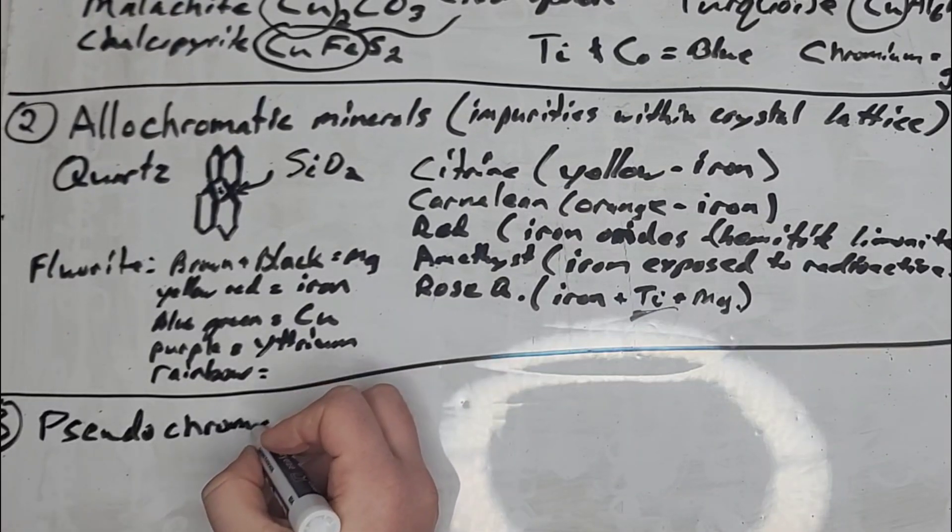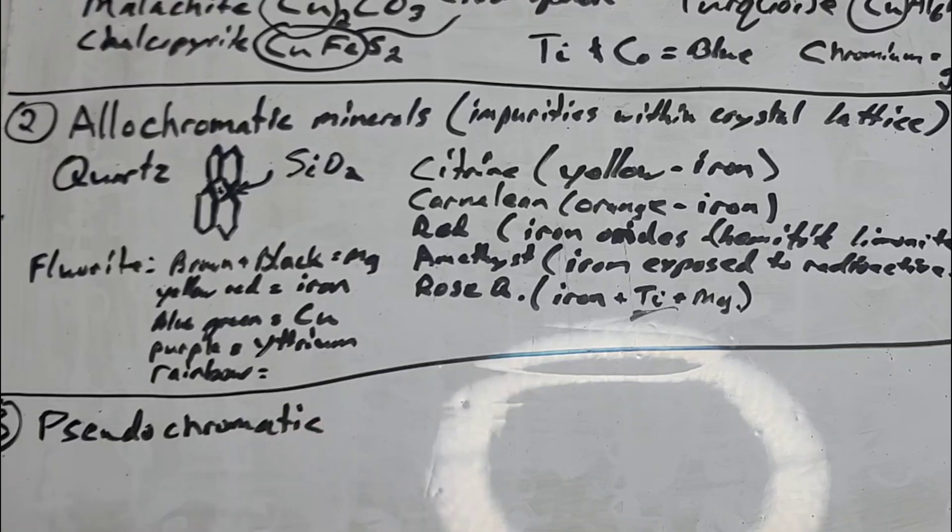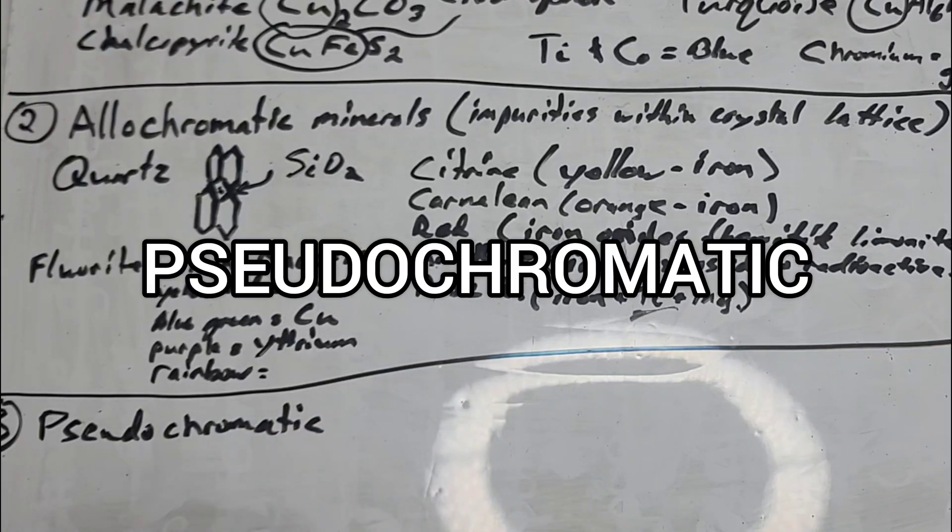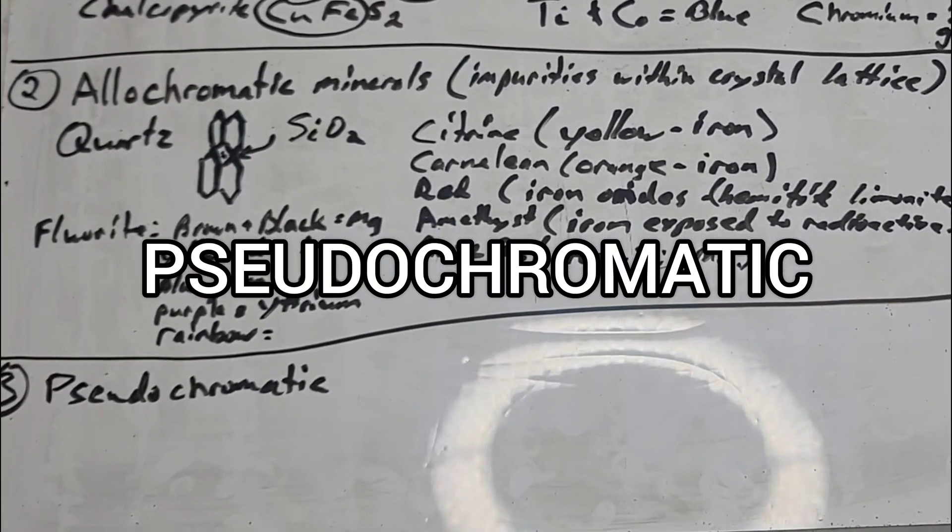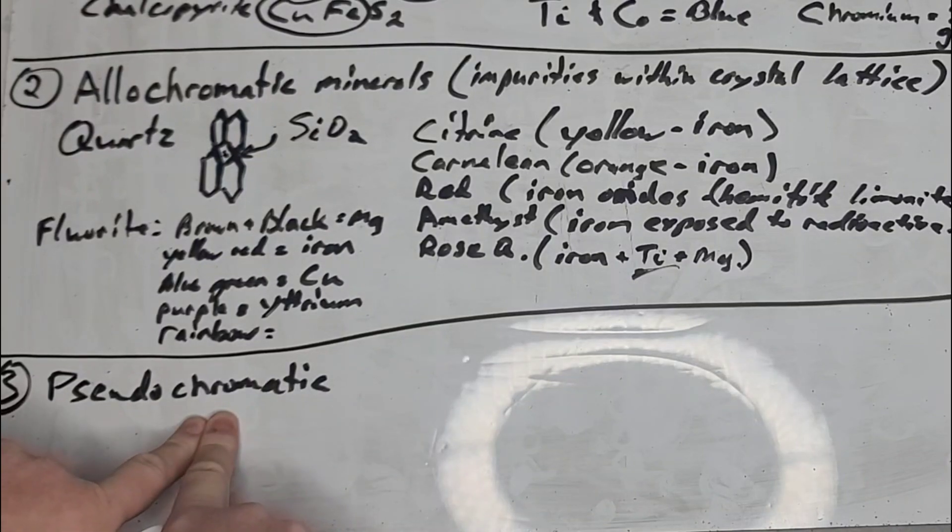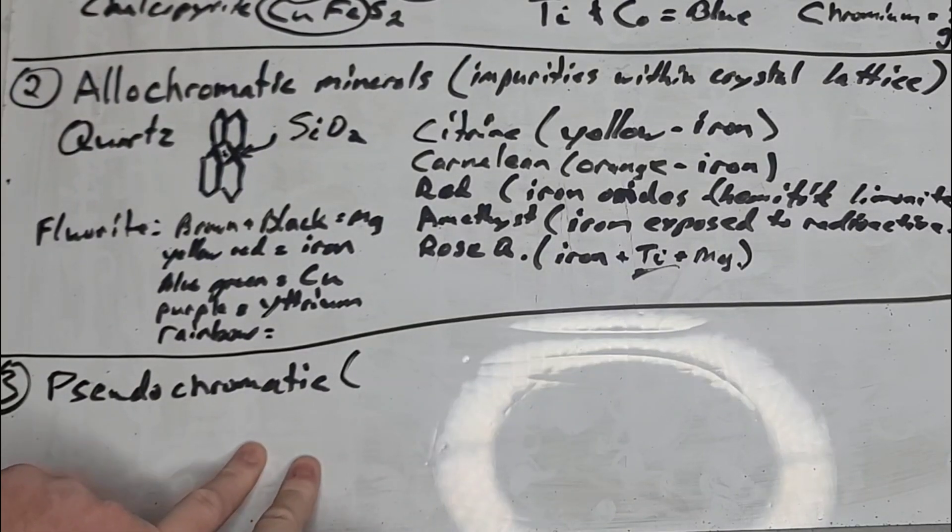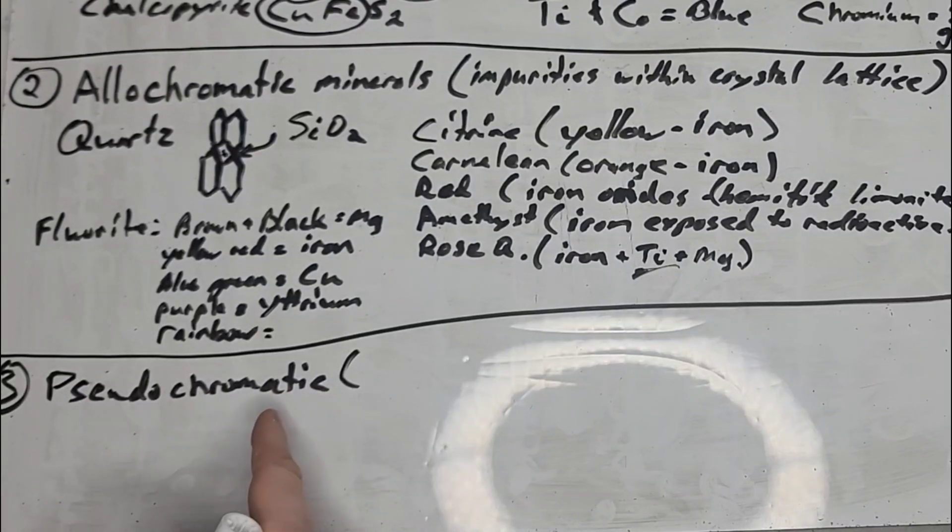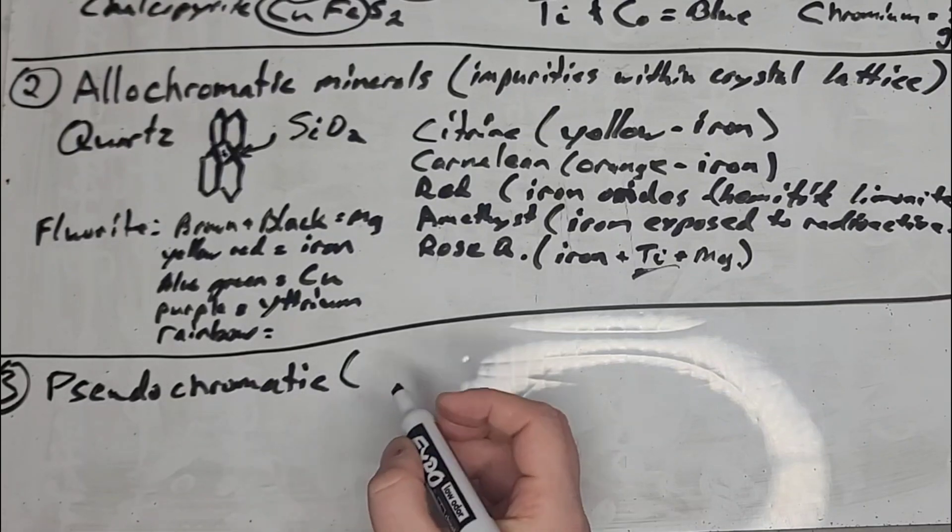The third type is called pseudochromatic. Can you guess how pseudochromatic minerals get their color? Answer in the comments right now before we go any further in the video, if you can guess it. Pseudochromatic minerals are caused by light interacting with the physical structure of the crystals within the mineral.